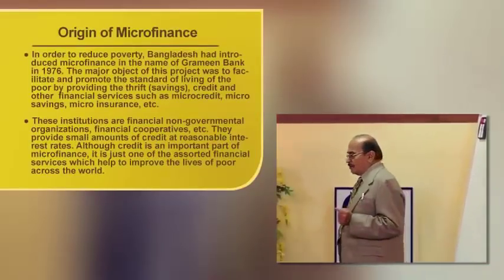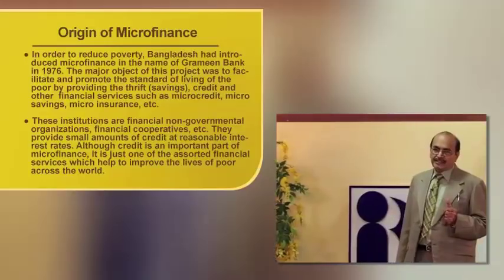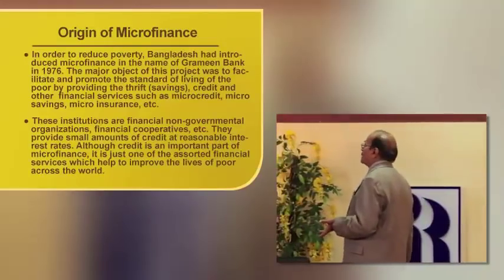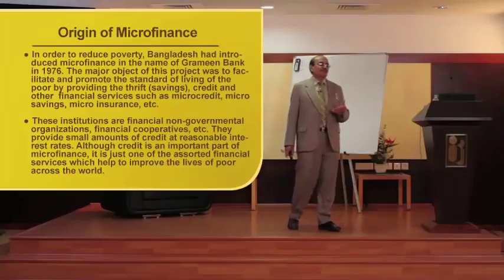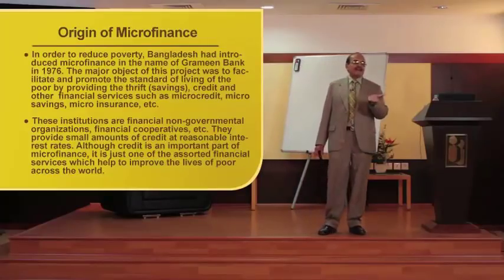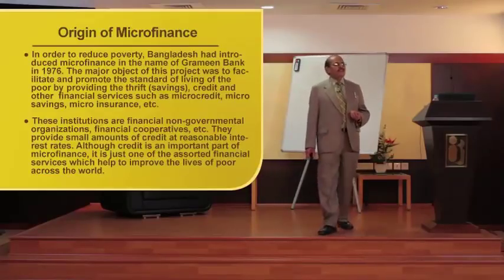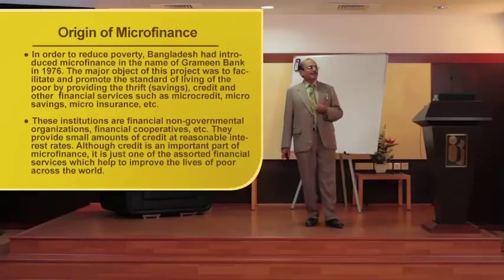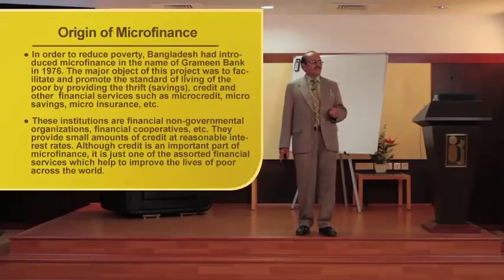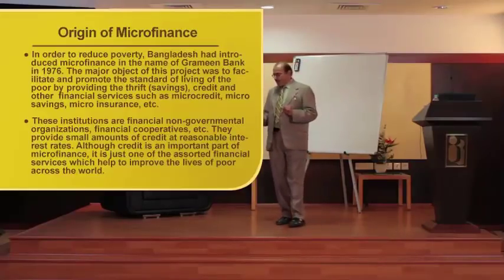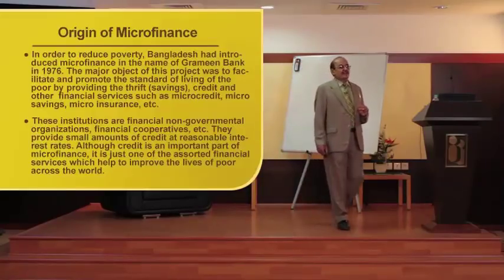The origin of microfinance started from Bangladesh. They established a bank called Grameen Bank way back in 1976, and this has become very popular worldwide. The major objective of this product was to facilitate and promote the standard of living of the poor by providing savings facilities, small credits — that is loans — and other financial services such as micro savings, insurance, etc. The beginning of microfinance was in 1976, started by Dr. Muhammad Yunus.